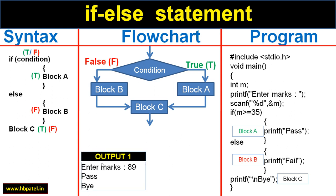Now let us see how the program behaves when we run it. If I enter marks as 89, this value goes into variable m. Then it checks: is 89 greater than or equal to 35? Yes, it is true. In that case it goes into block A and then block C. So it will print 'pass' and then 'bye' on the next line.